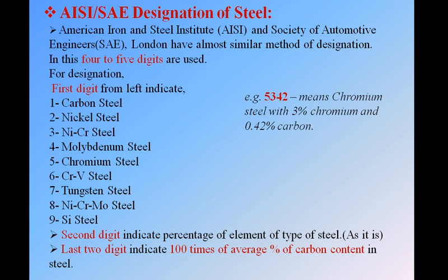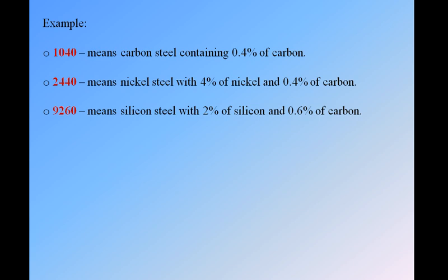Example: 1040. The digit 1 means it is carbon steel. Here there is no second digit for the alloying element since it is plain carbon steel. The last two digits 40 divided by 100 gives 0.40% carbon.